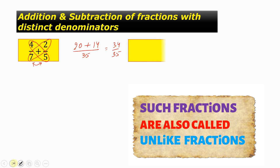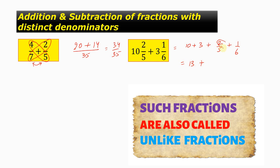The next question is 10 and 2/5 plus 3 and 1/6. This can be written as 10 plus 3, plus 2/5 plus 1/6. So this is 13 plus. Now, 2 into 6 is 12, and 1 into 5 is 5, that is 12 plus 5 is 17, divided by the product of the denominators, that is 5 into 6, which comes out to be 30. So the answer will be 13 and 17/30.